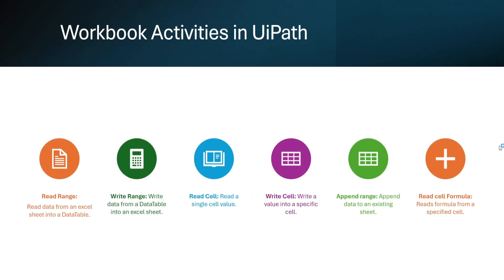Now let's see what are the main workbook activities in UiPath. We have read range, write range, read cell, write cell, append range, and read cell formula. Read range is used to read data from an Excel file. Write range is used to write data into an Excel sheet. Read cell reads one single cell value. Write cell writes a value to a specific cell. Append range appends data to an existing sheet. Read cell formula reads a formula from a specified cell.